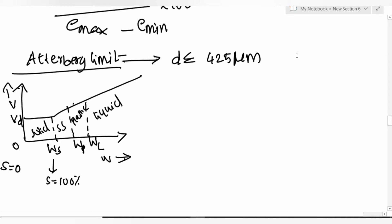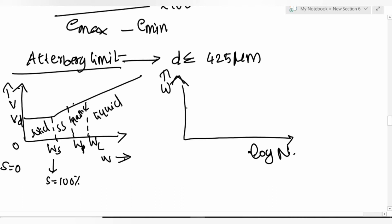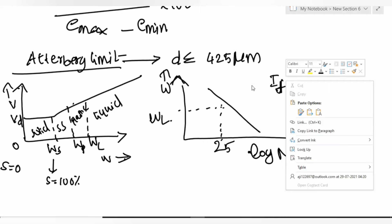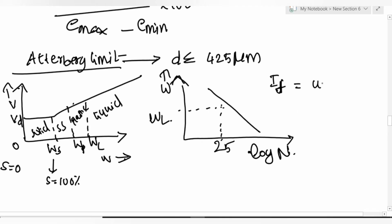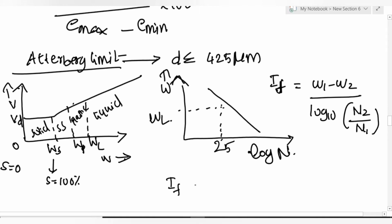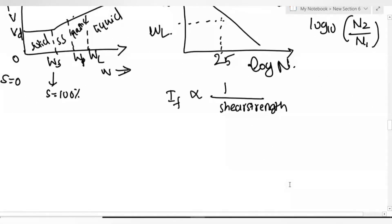The liquid limit is determined using the Casagrande apparatus. The resulting graph of water content vs log(number of blows N) is called the flow curve. Flow index If = (w1 - w2) / log10(N2 / N1). Flow index is inversely proportional to shear strength — this is important.